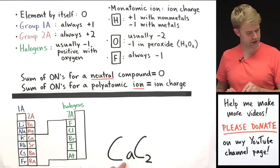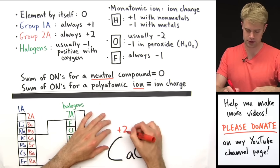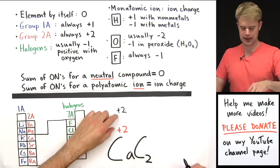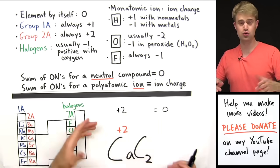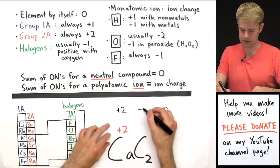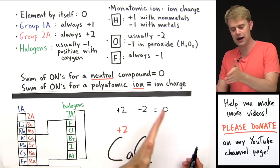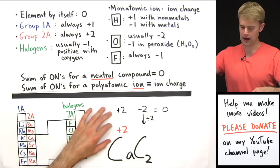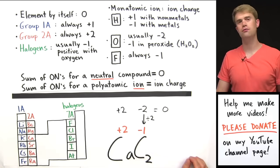CaC2. Calcium is in group 2A, so we know its number is always plus two. We don't know what carbon's number is, but we can figure it out. Calcium's number plus whatever carbon's number is needs to equal zero because this is a neutral compound — it doesn't have a charge. That means the total number on carbon is going to be negative two. But there are two carbons, so we divide by two to get an oxidation number of minus one for each one. Plus two for calcium, minus one for carbon.